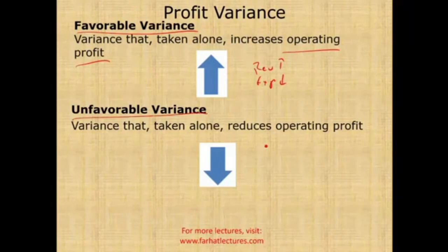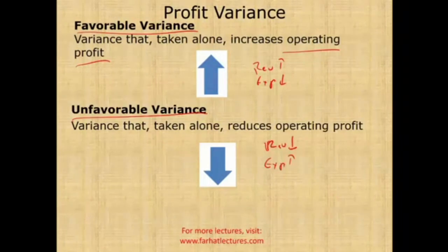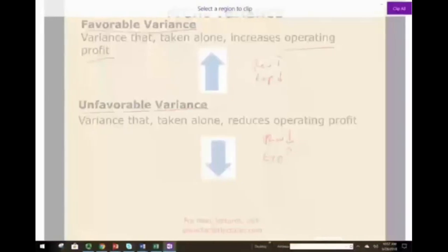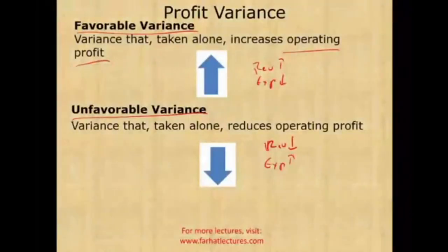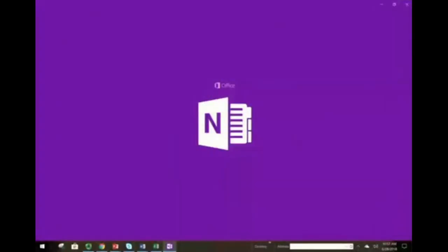An unfavorable variance is one that, taken alone, reduces operating profit — either because you have less revenues or your expenses went up. To illustrate this concept, the best approach is to draft a budget, compare the budget to actual results, and analyze them line by line.